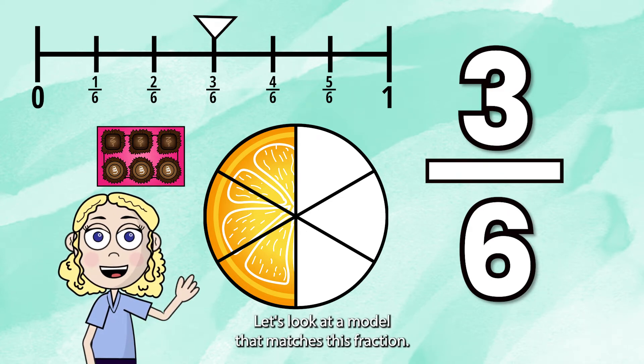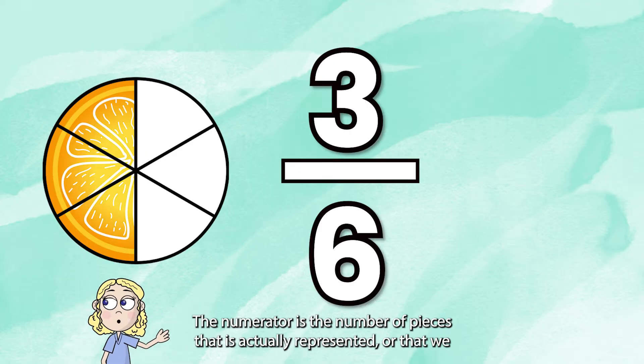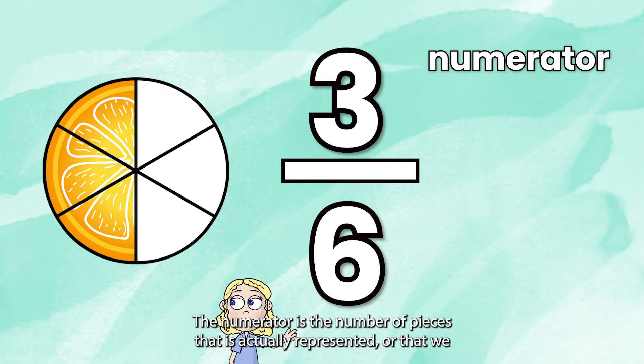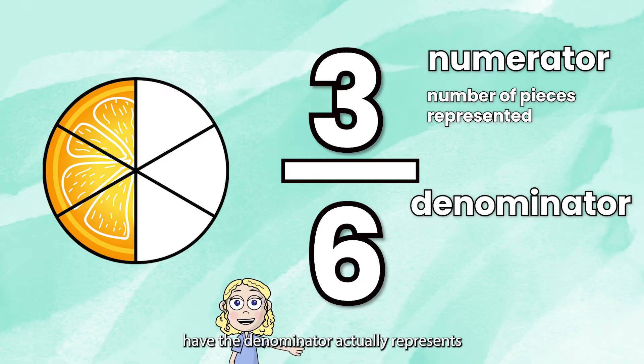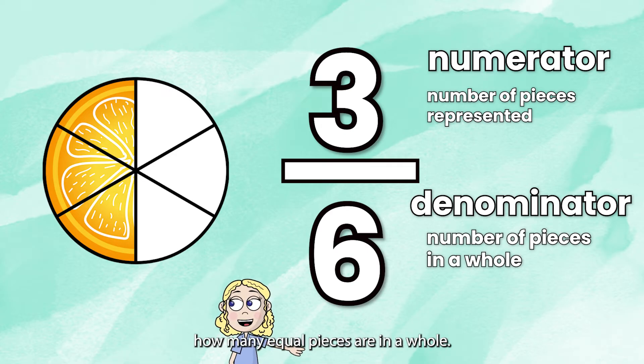Alright, let's look at a model that matches this fraction. The numerator is the number of pieces that is actually represented or that we have. The denominator actually represents how many equal pieces are in a whole.